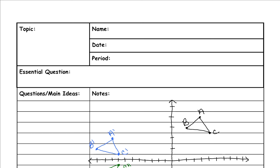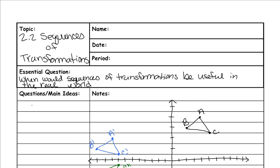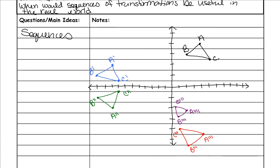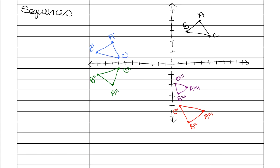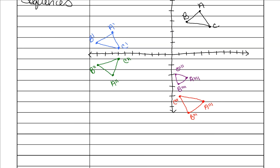Today we're going to be looking at sequences of transformations. An essential question would be, when would sequences of transformations be useful in the real world? We're going to go over sequences first, and sequences are different from combinations because you're already given all the pictures, and then what you're supposed to do is tell me what happened between all those. So the easiest thing to do is to write down all the points first, so we're going to do that first.